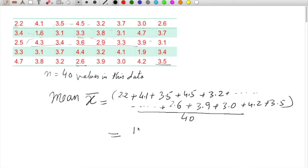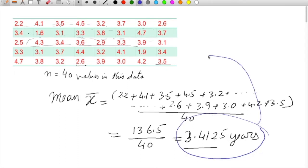So it comes to about 136.5 divided by 40, that is 3.4125 years. The unit remains the same. So that's a value we can use as a representation of the center value of this whole data.